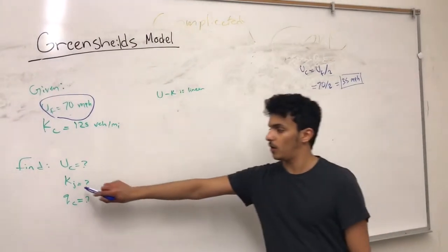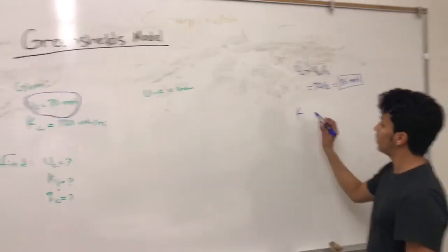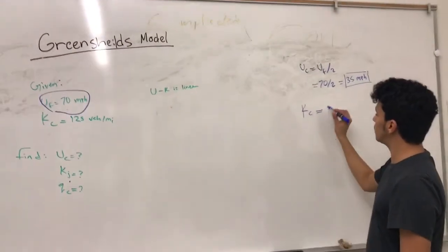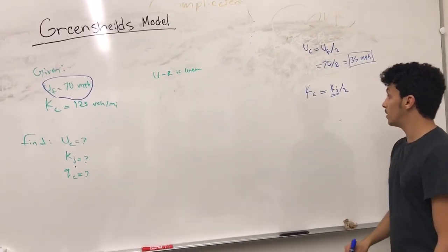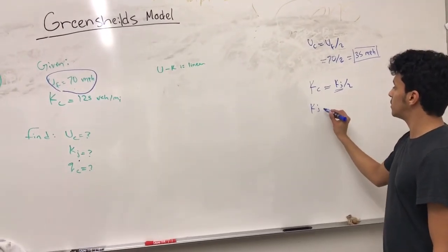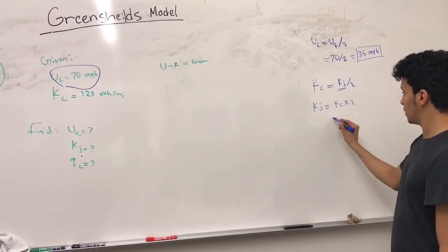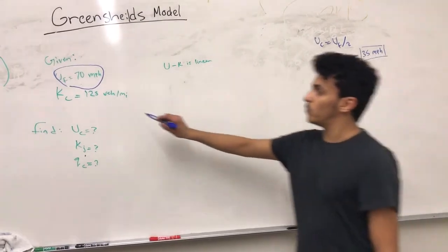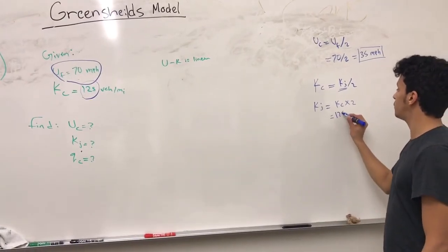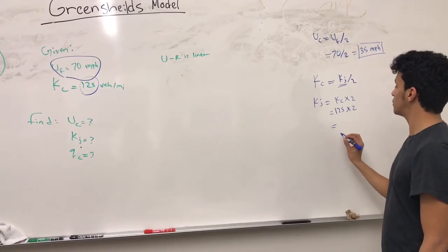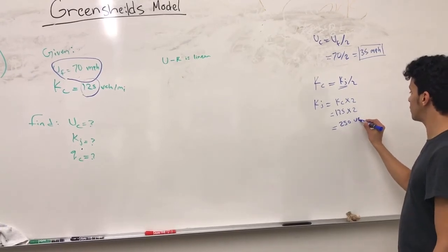The second part of the question, we need to find jam density. Since we know the density at capacity equals jam density over 2, we need to find jam density. And jam density equals density at capacity multiplied by 2. We are given the density at capacity which is 125 and multiplied by 2. And we will get jam density which is 250 vehicles per mile.